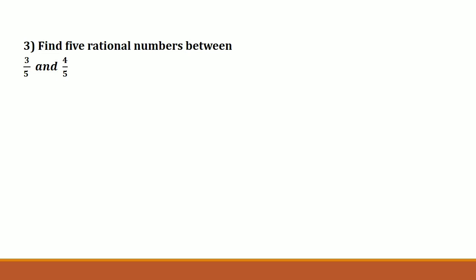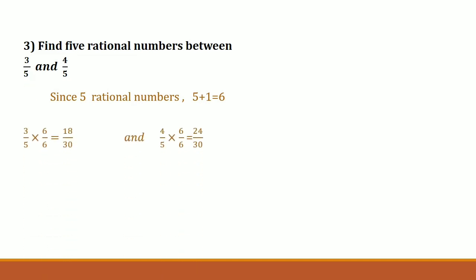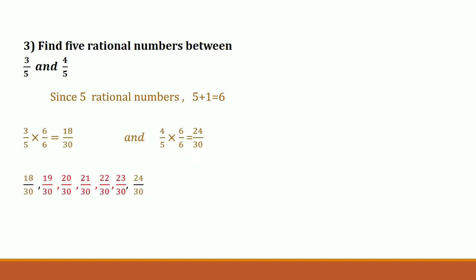The third question reads: find five rational numbers between 3 upon 5 and 4 upon 5. Since we have to find five rational numbers, we add 1 to 5 to get 6. The first number 3 upon 5 is multiplied and divided by 6 to get 18 upon 30, and the second number 4 upon 5 is also multiplied and divided by 6 to get 24 upon 30. The numbers lying between 18 upon 30 and 24 upon 30 are 19 upon 30, 20 upon 30, 21 upon 30.